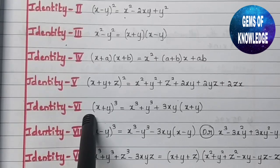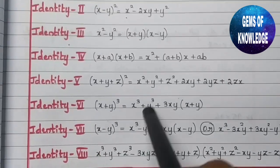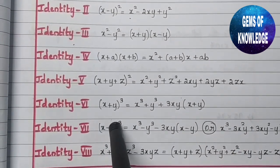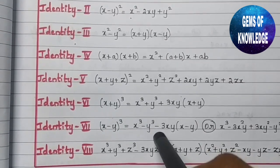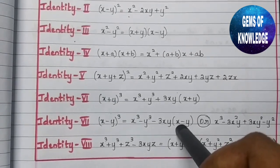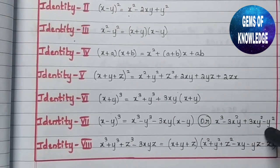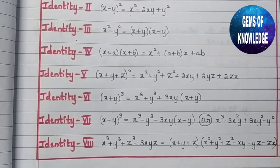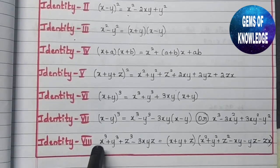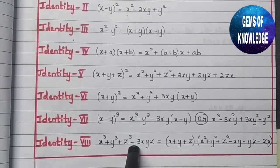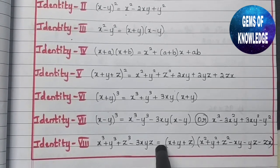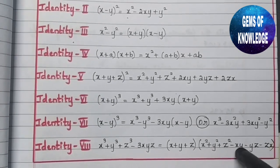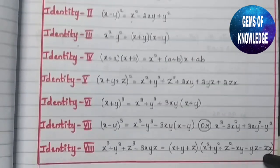The sixth identity is (x + y)³ = x³ + y³ + 3xy(x + y). The seventh identity is (x - y)³ = x³ - y³ - 3xy(x - y), which can also be written as x³ - 3x²y + 3xy² - y³. The eighth identity is x³ + y³ + z³ - 3xyz = (x + y + z)(x² + y² + z² - xy - yz - zx).